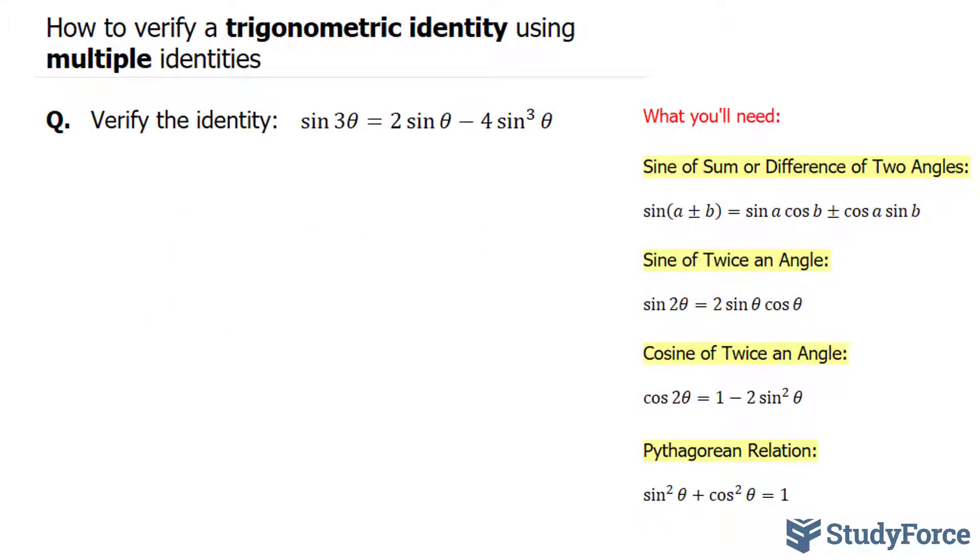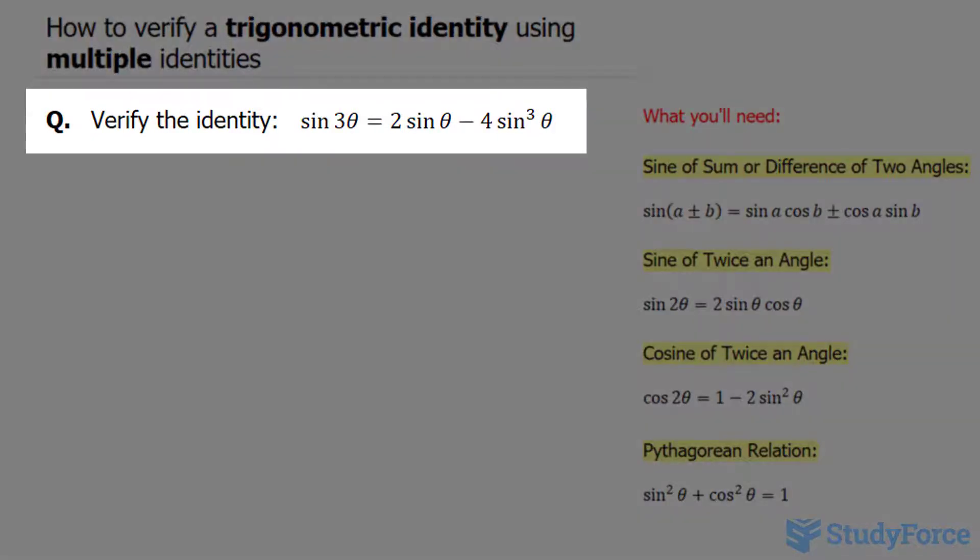In this lesson, I'll show you how to verify a trigonometric identity using multiple identities. The question reads: verify the identity sin 3θ = 2 sin θ - 4 sin³θ.